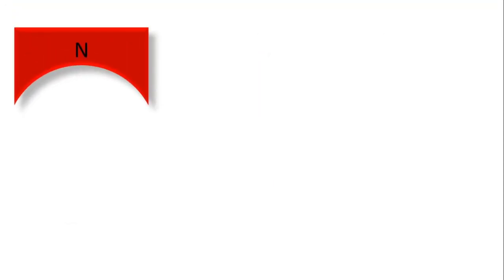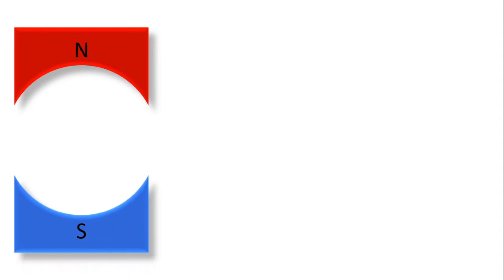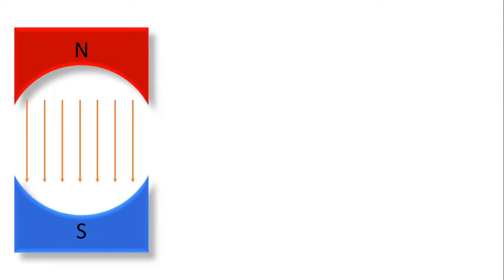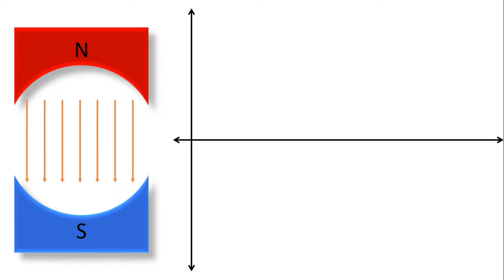Here we have two poles — an N pole and an S pole. With these two poles there is a magnetic field directed from N towards S. In this magnetic field we will place a conductor, and on the right-hand side we will observe the waveform of the induced EMF.